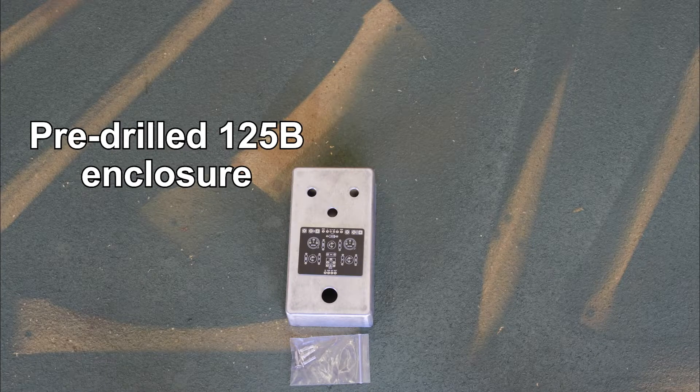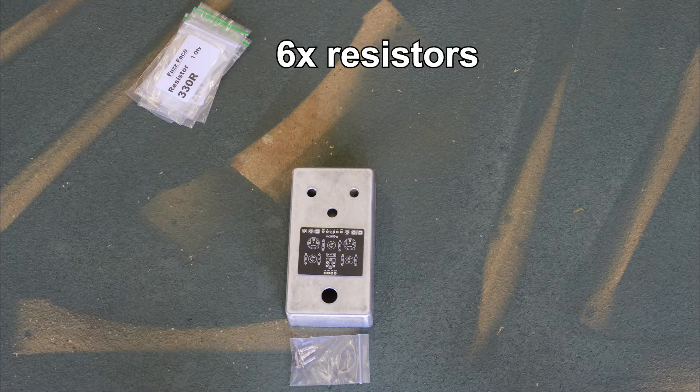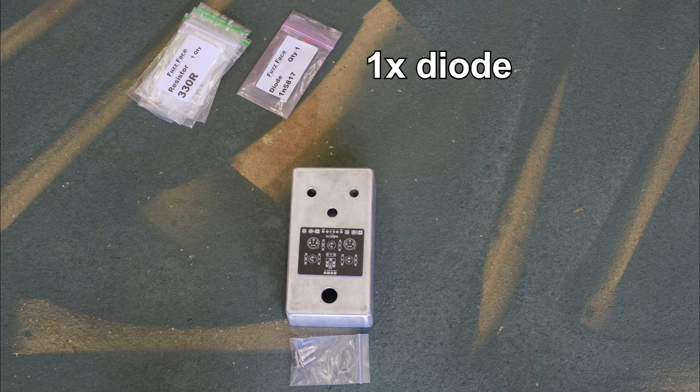Begin by sorting your kit by components. There should be a pre-drilled 125B enclosure and pedal PCB, silly smile PCB, six different resistors, and one 1N5817 diode.